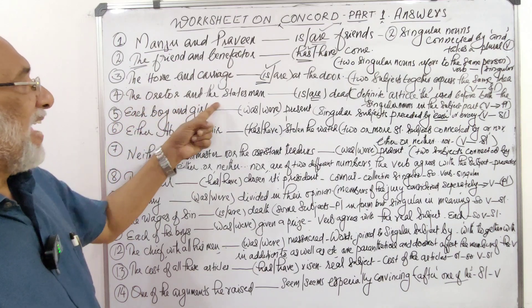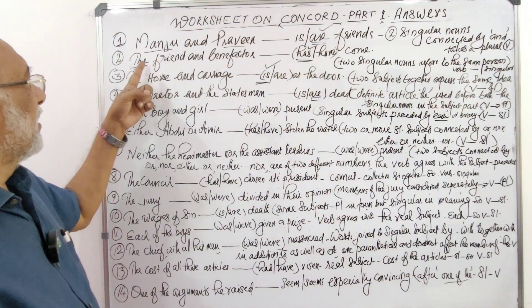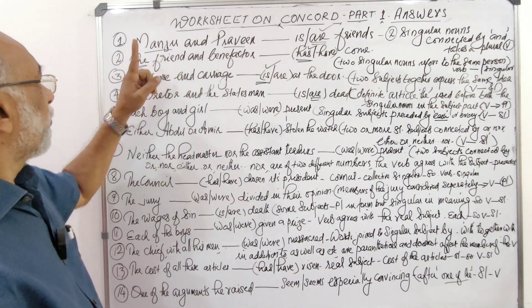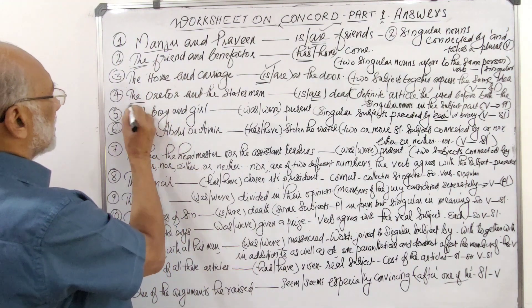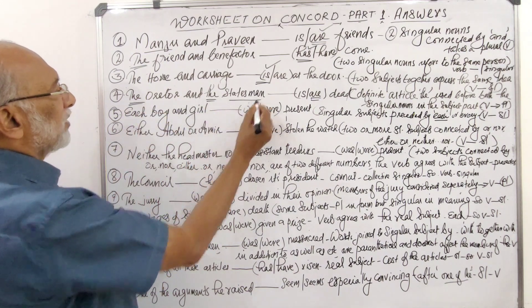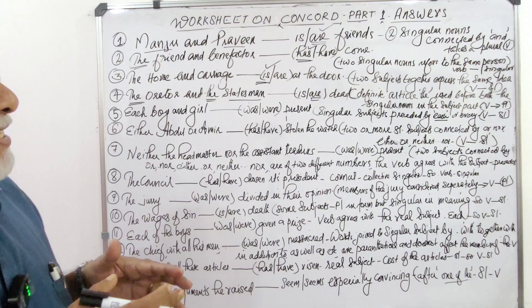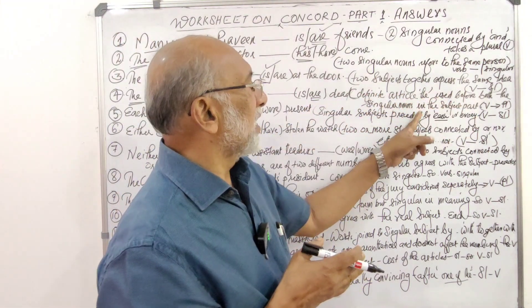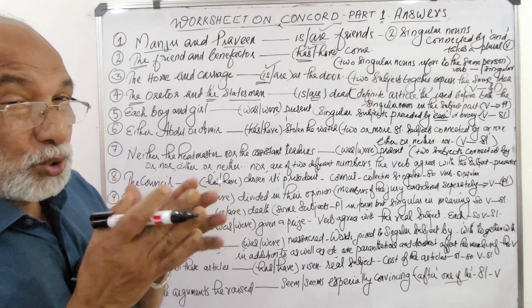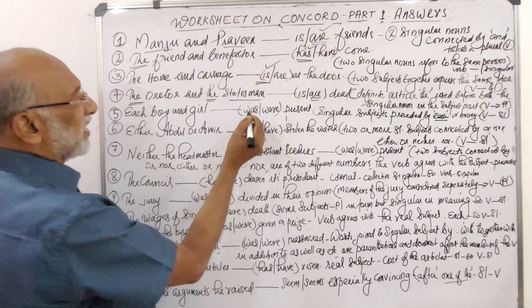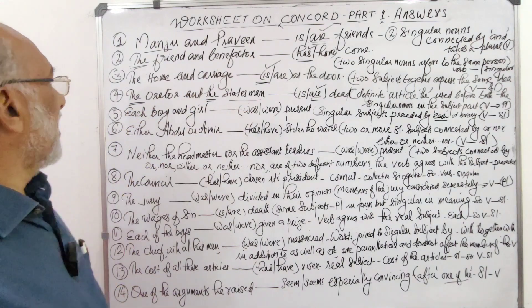Question 4: 'The orator and the statesman is/are dead.' The answer is 'are dead.' As I explained in question 2, when the definite article 'the' is used only before one noun, it refers to the same person. But here 'the' is used before both singular nouns in the subject, so the verb should be plural — meaning two different people. 'The orator and the statesman are dead' — one is the orator and the other is the statesman.